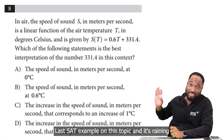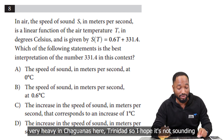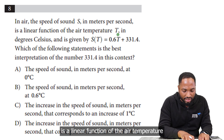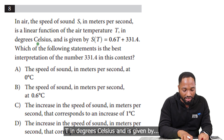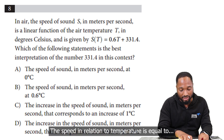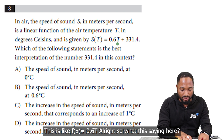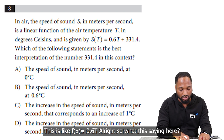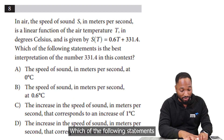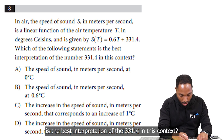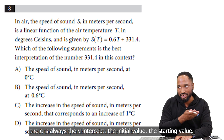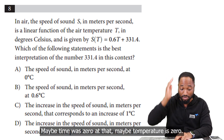Last SAT example on this topic. The speed of sound s in meters per second is a linear function of the air temperature t in degrees Celsius, given by s = 0.6t + 331.4. The question asks: which of the following is the best interpretation of 331.4 in this context? That's the first value — the y-intercept — the initial value when temperature is zero.